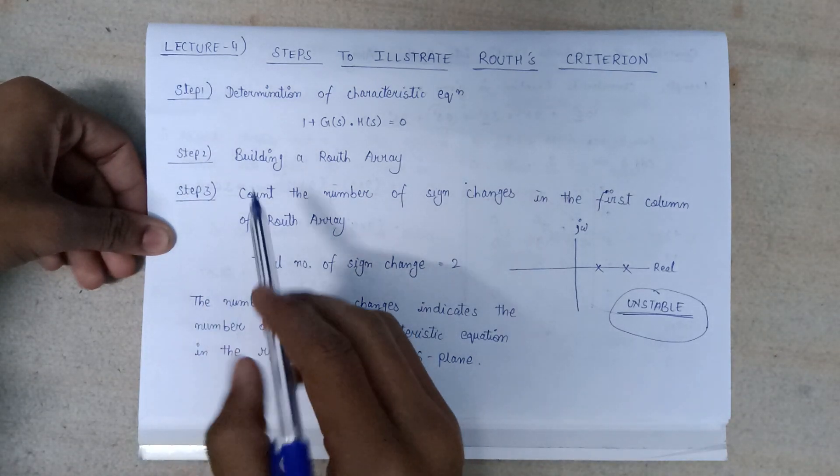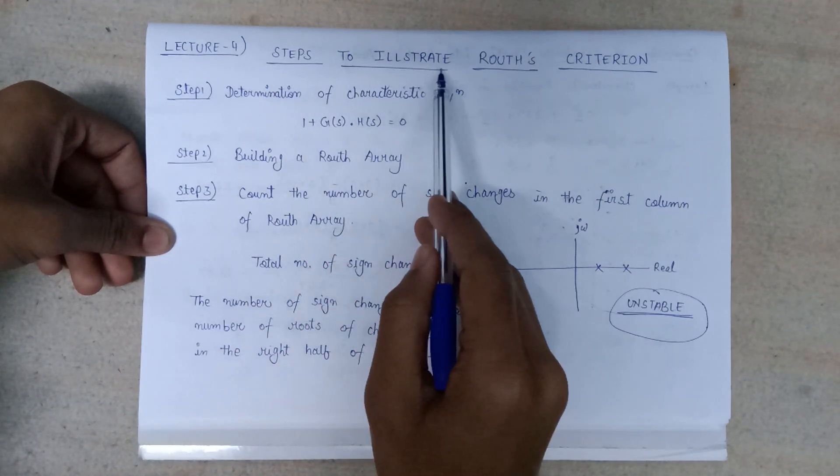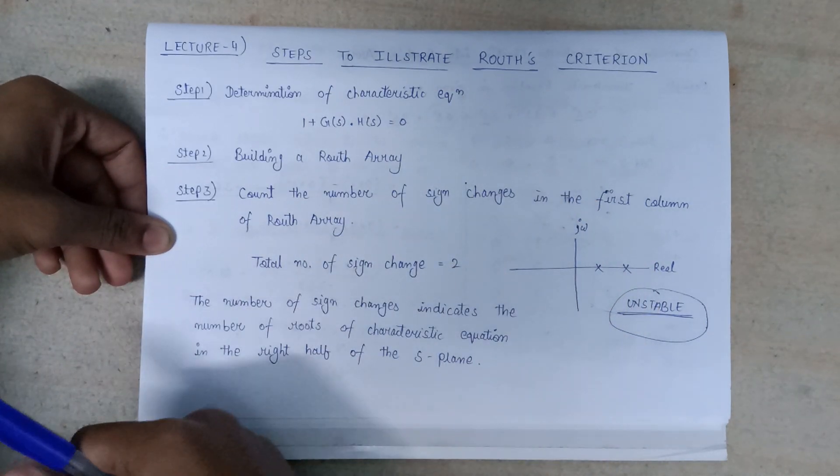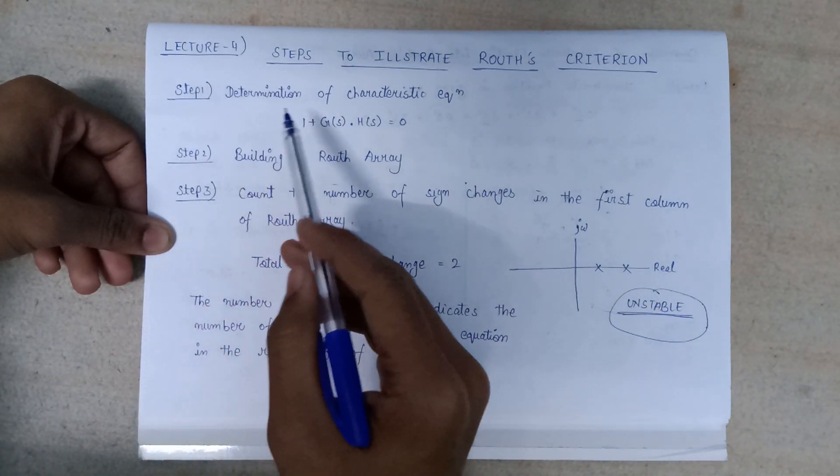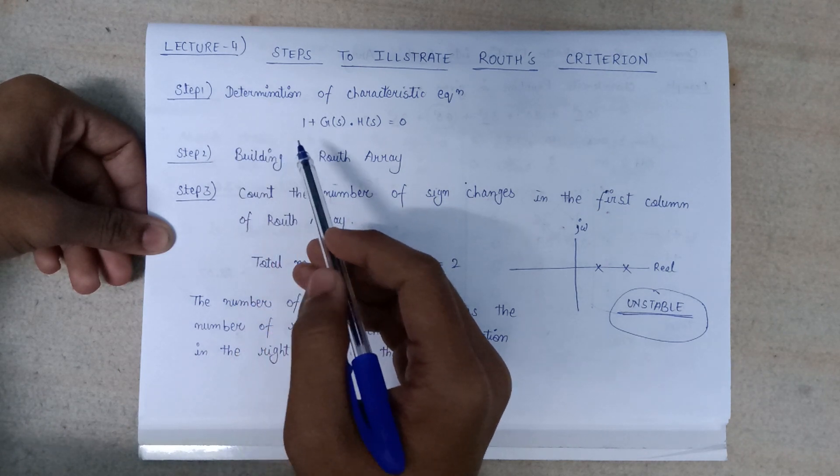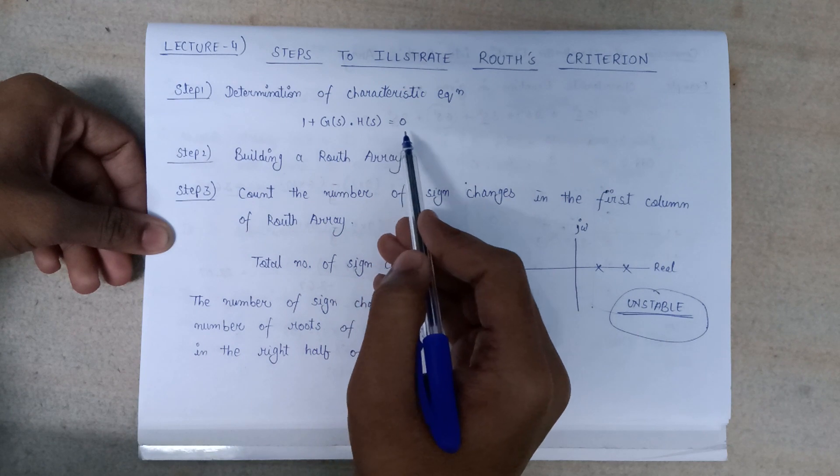In this lecture, we are going to discuss the steps to illustrate the Routh criteria. There are three major steps that we need to follow to check if the system given to us is stable or not.